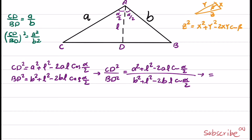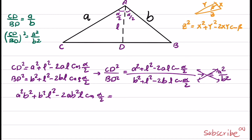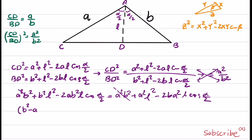This gives A squared over B squared equals (A squared plus L squared minus 2AL·cosine(alpha/2)) over (B squared plus L squared minus 2BL·cosine(alpha/2)). Simplifying by cross-multiplying, we get A squared·B squared plus B·A squared·L squared minus 2AB squared·L·cosine(alpha/2) equals A squared·B squared plus A squared·L squared minus 2B·A squared·L·cosine(alpha/2).